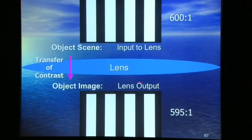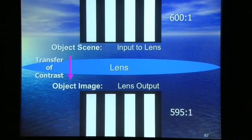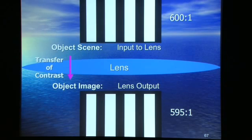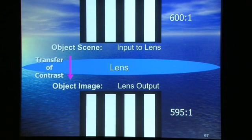Hopefully that object image would be exactly that if we had a perfect lens. There is no such thing as a perfect lens — we are a most imperfect science. So we cannot get 600 to 1 through. Let's say we've got a terrific lens; it's still going to be a little shy. We lose a little contrast even at the lowest frequencies of a black and white high contrast input. This is very important.